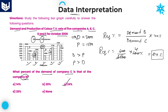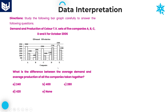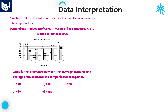Option C is the right answer for question 1. Question 2: What is the difference between the average demand and average production of all companies taken together? First we calculate average demand, then average production, then the difference between those two values.